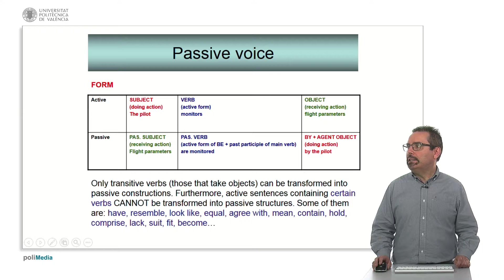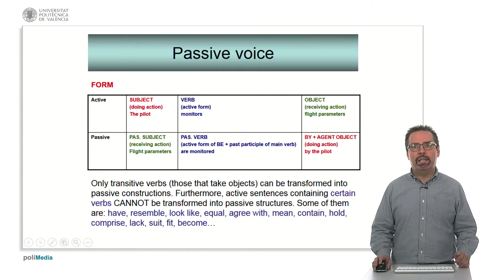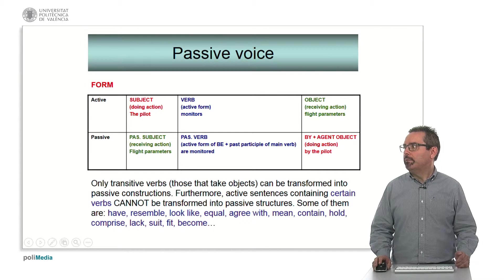In a passive sentence, the passive subject receives the action — it doesn't produce the action. The verb is in the passive form as we will see in a minute. And sometimes we can include the person or the thing that carries out the action by means of the construction 'by' plus the agent. For example, flight parameters are monitored by the pilot.